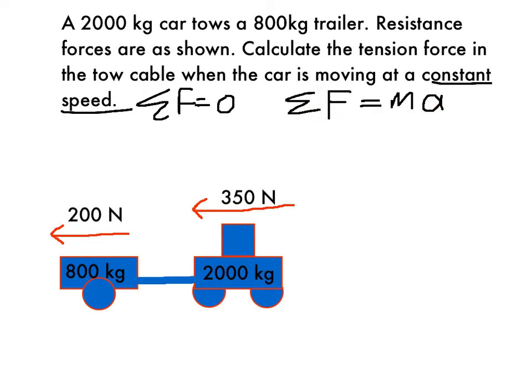So if we think for a moment about just the trailer, and this really is the secret to these problem types, is just isolating that trailer. So here we have a trailer with a resistance force of 200 newtons. It's a combination of drag and air resistance and friction on the road and that sort of stuff.